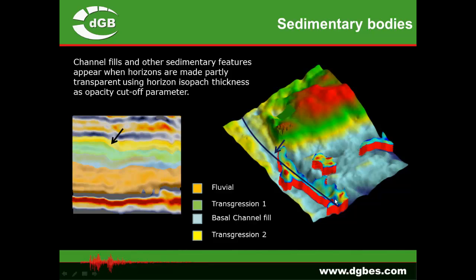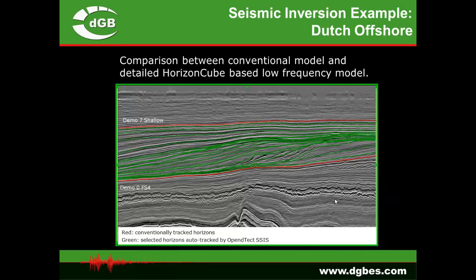Any well that hits the channel in an oblique way will be a less efficient producer. The next example shows how the HorizonCube can help improve seismic inversion by building much more detailed geologic models — specifically the low frequency model. We compare two inversions: a conventional one building the low frequency model using only the top and base horizon, and a second experiment building the low frequency model with all the additional green horizons derived from the HorizonCube. We have four wells and the well data are interpolated between the framework horizons.